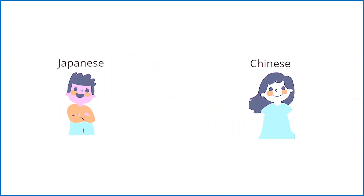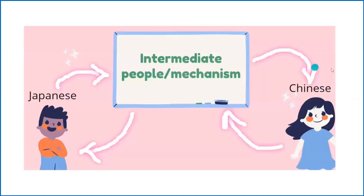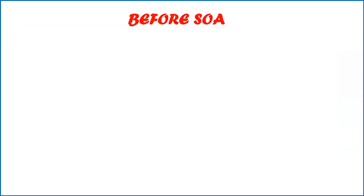The problem is that particular services are talking to each other and one application is talking to another. Similarly, if we compare it with SOA — talking about the before-SOA situation — applications need to talk to each other.